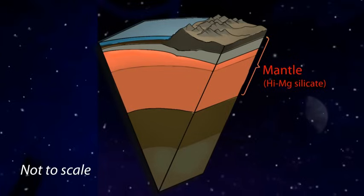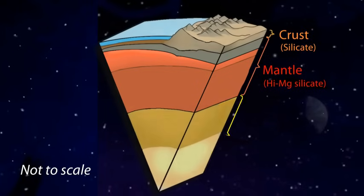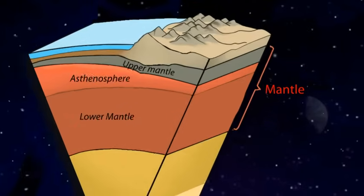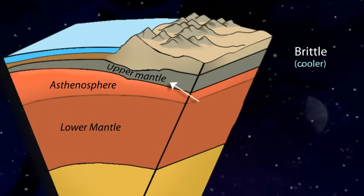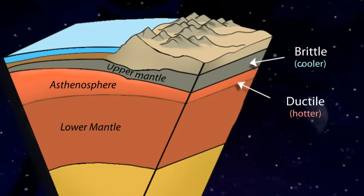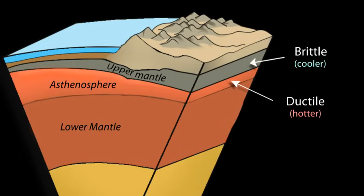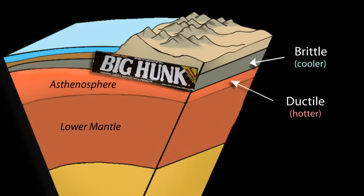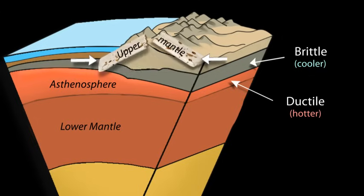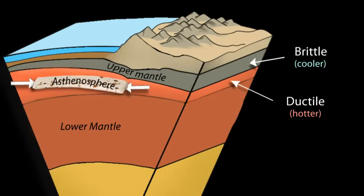The mantle is a 2900 kilometer thick, high magnesium silicate rock layer located between the crust and the core. The uppermost part, the lithospheric mantle, is cooler and more rigid than the deeper mantle. It lies above a hotter and more ductile layer of similar composition called the asthenosphere. As an analogy to how rock can either be brittle or ductile, consider a taffy bar like the Big Hunk.